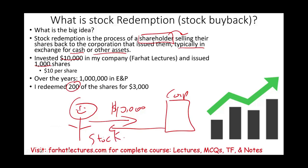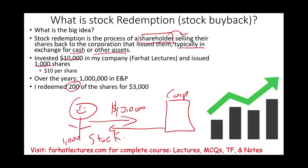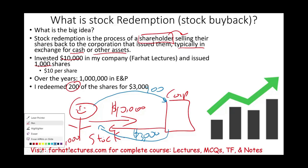We issued 1,000 shares. What I did now is I'm going to sell back 200 of those stocks, and I want the company to give me back $3,000. That's what we did. So it's like the opposite of when the company was established — I redeemed those shares.